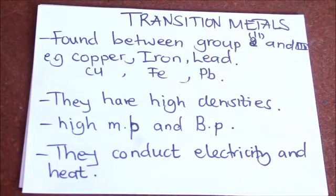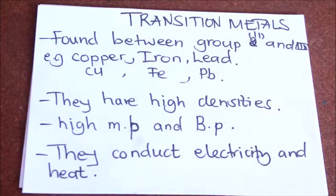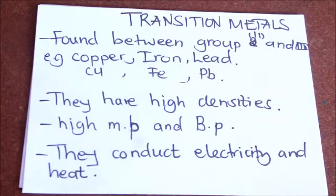Transition metals are the elements which are found between group 2 and group 3. For example, there is copper, the symbol for copper is Cu; iron, Fe; and lead, which is Pb.